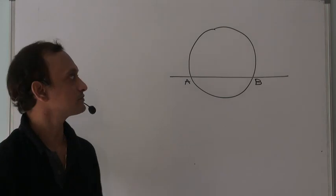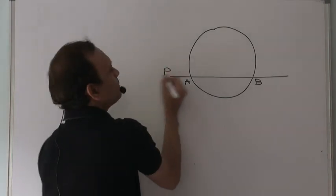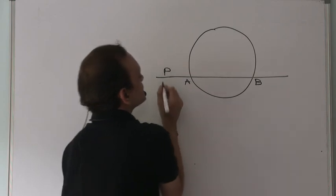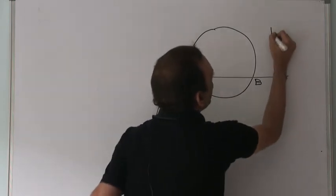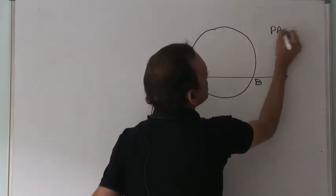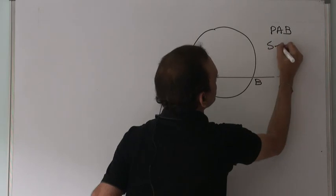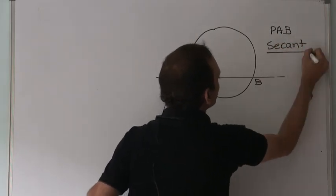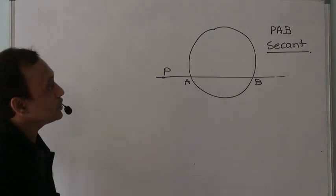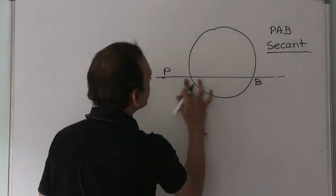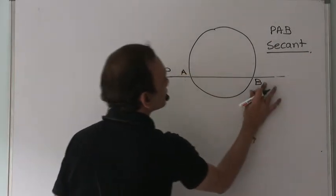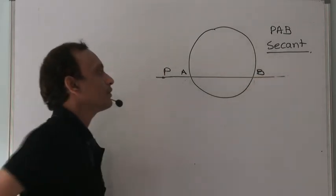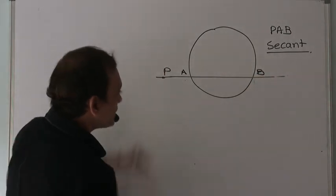If you take any point on AB extended — say point P — then PAB is referred to as a secant of the circle. This is called a secant.